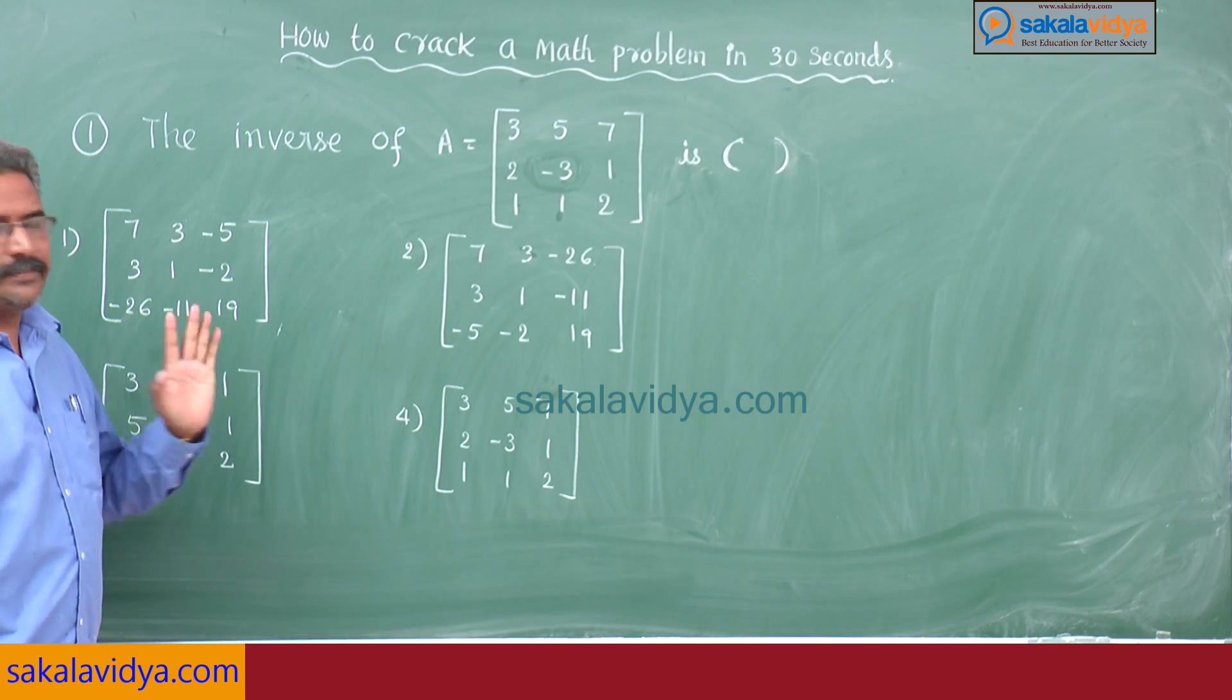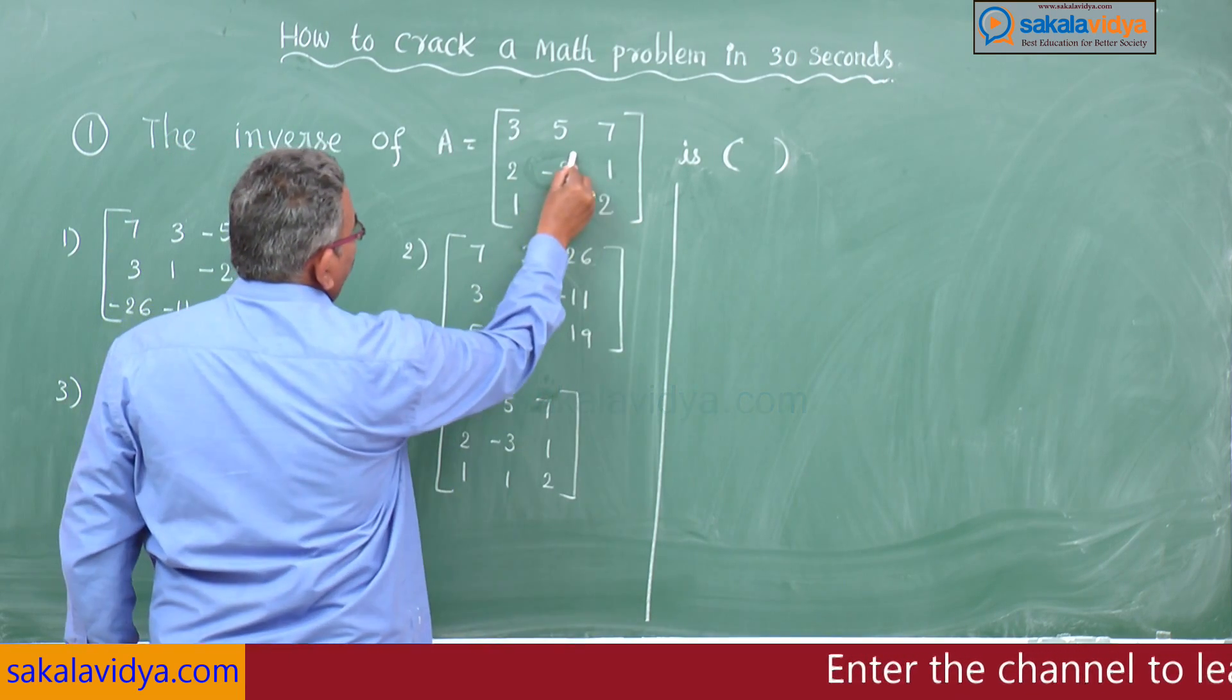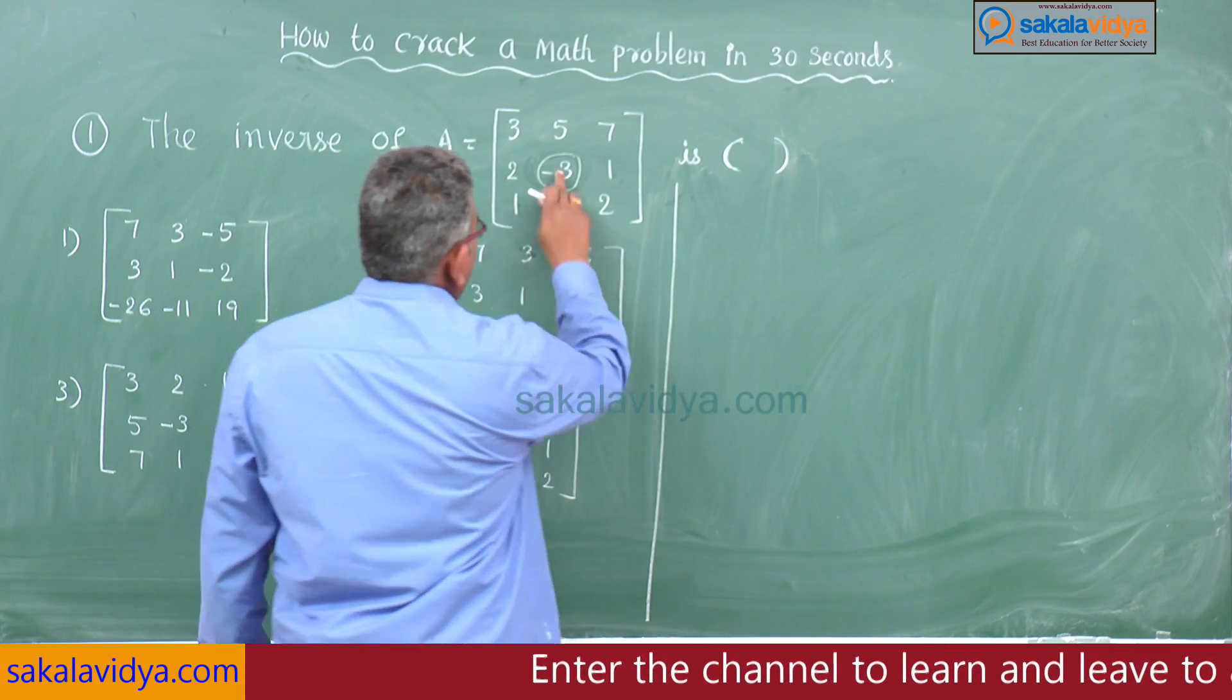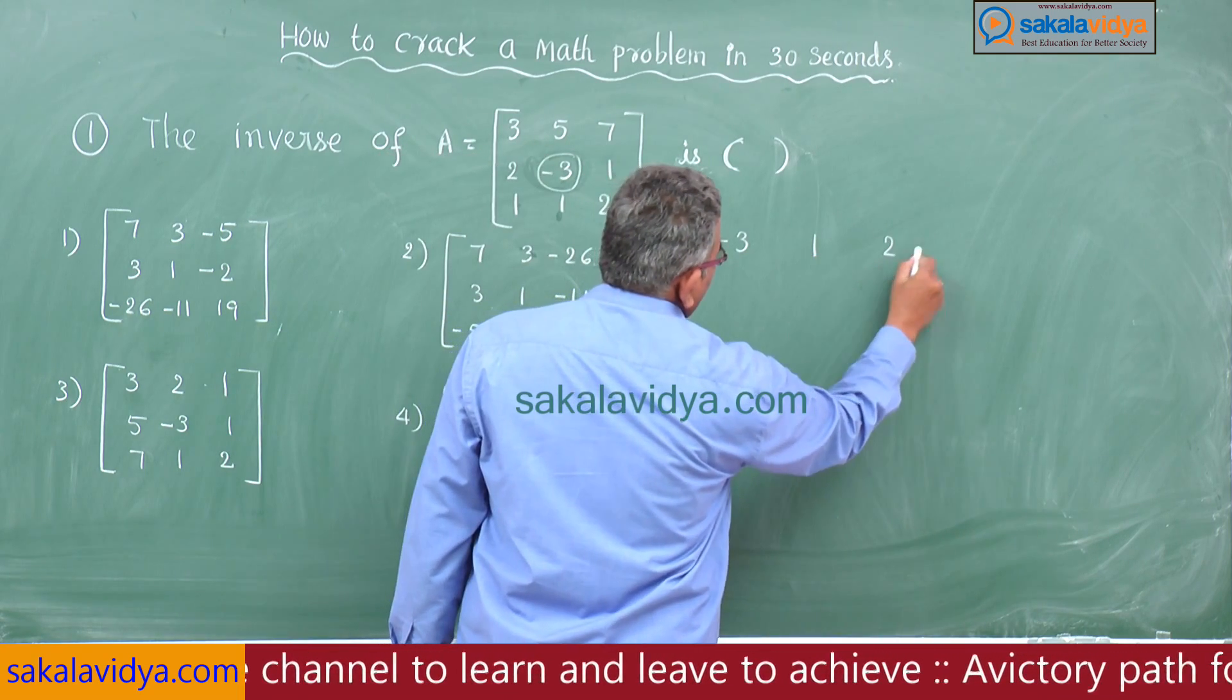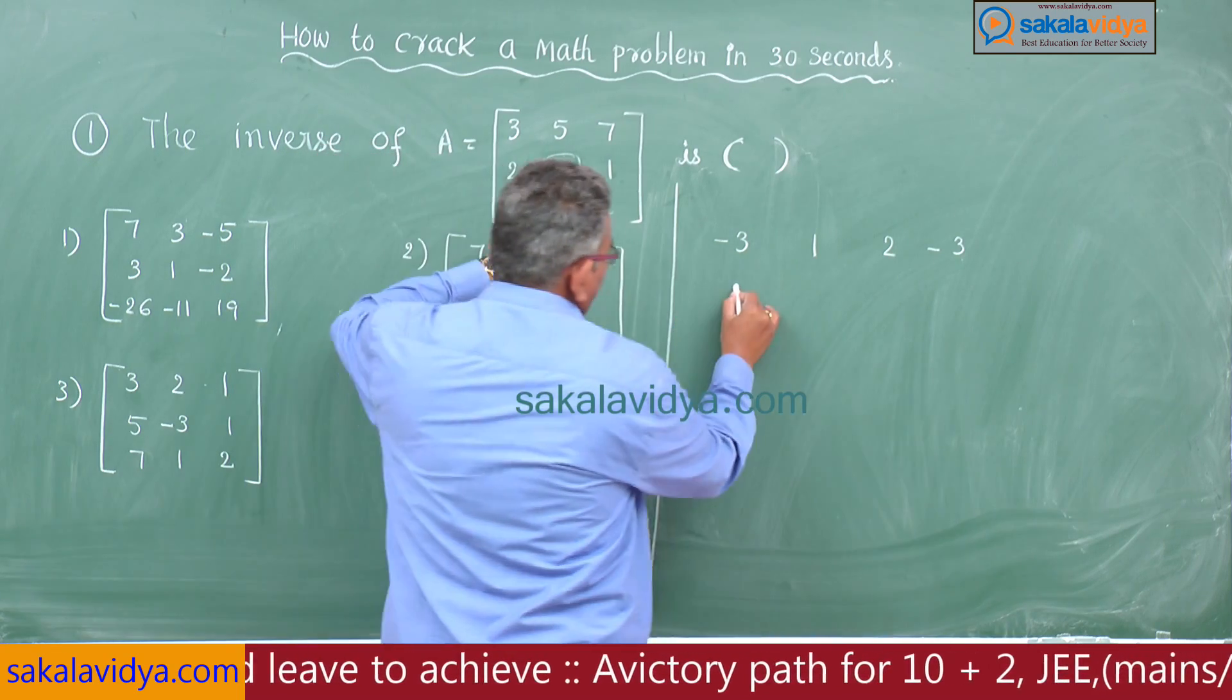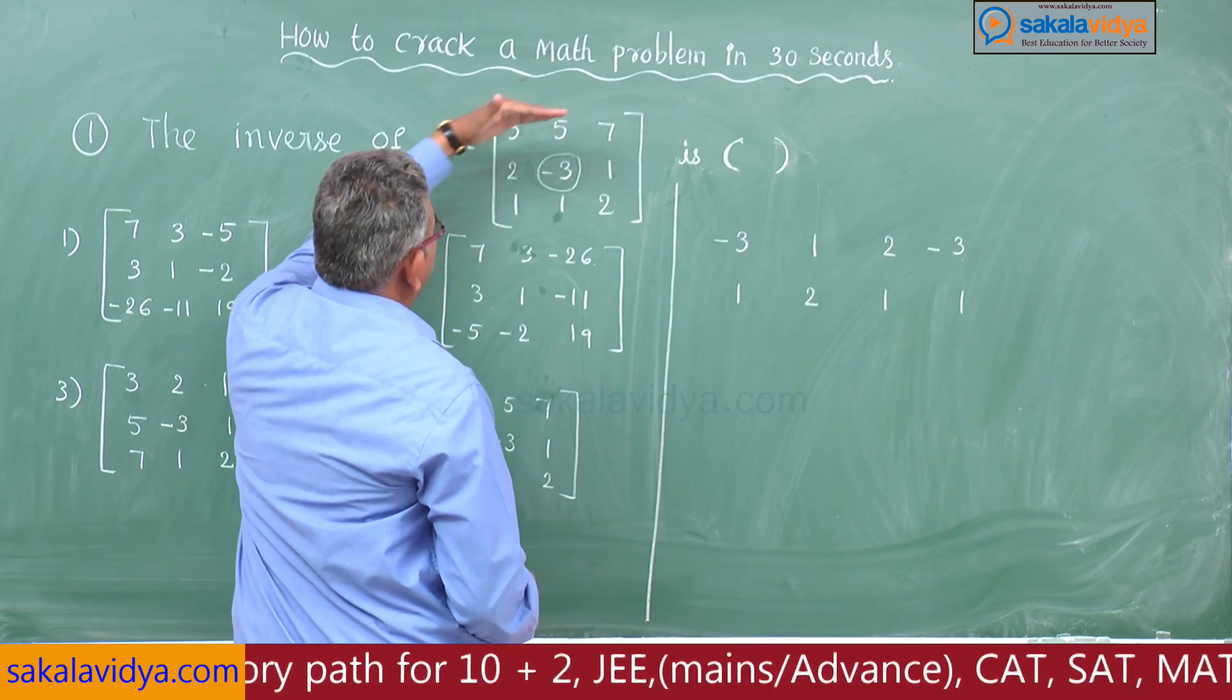Now let me explain the shortcut. How to find out the shortcut? First take this middle element. Are you following? Then you write down like this: -3, 1, 2, -3, next down here 1, 2, 1, 2, 1, 1.